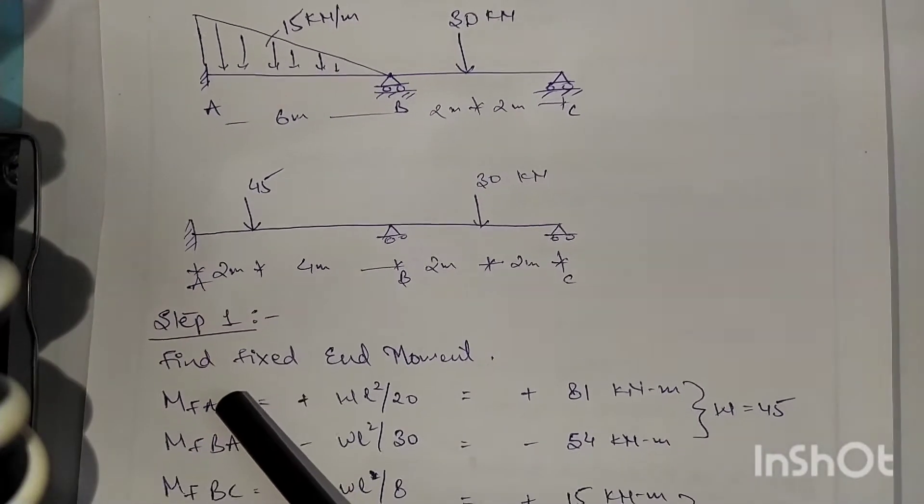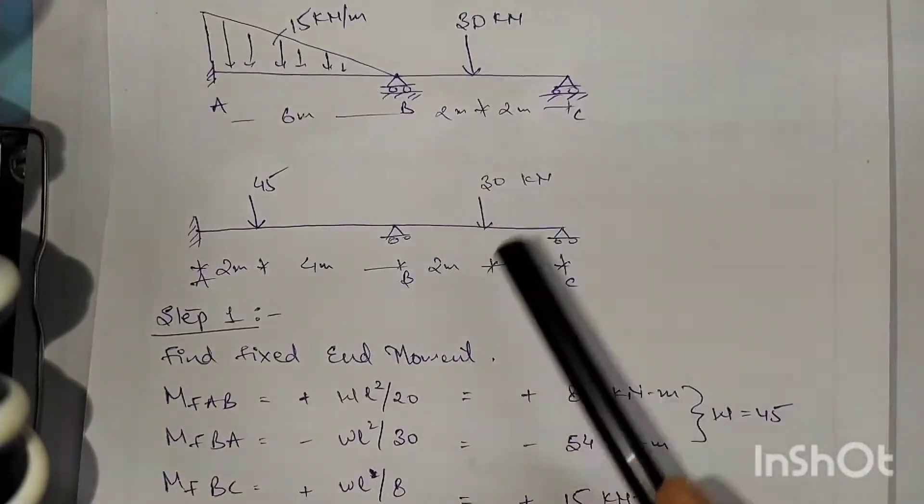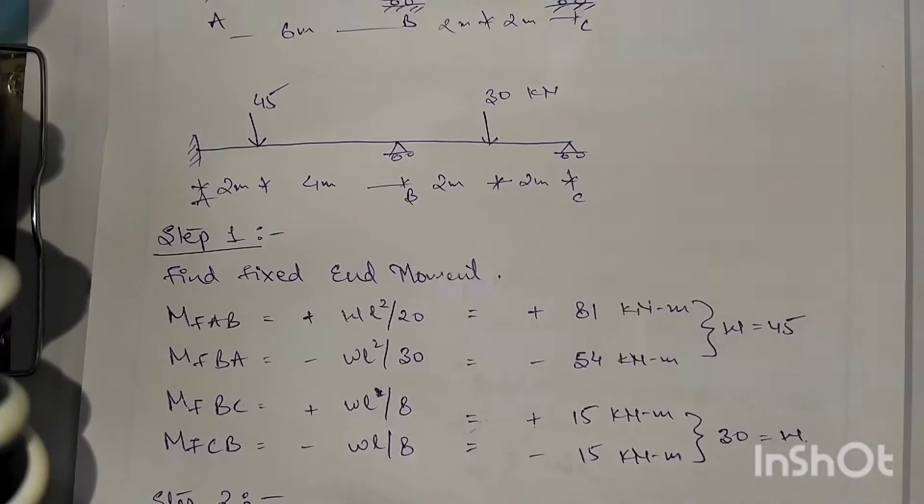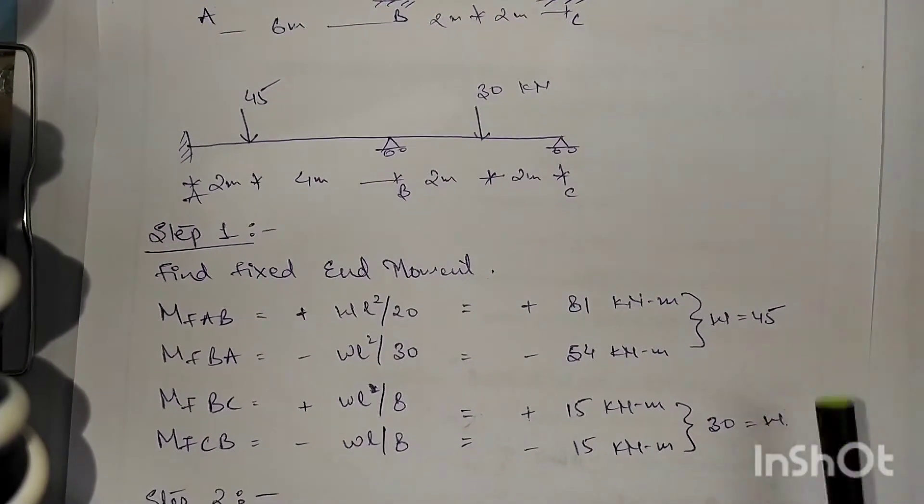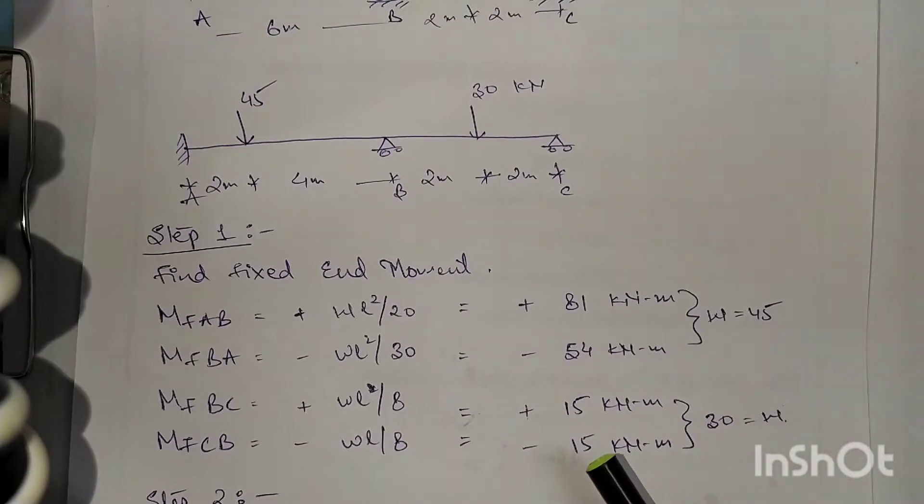Step number one: fixed end moment. For triangular loading, left hand side we have w L squared by 20, right hand side we have w L squared by 30. We have taken positive, negative, positive, negative alternate.